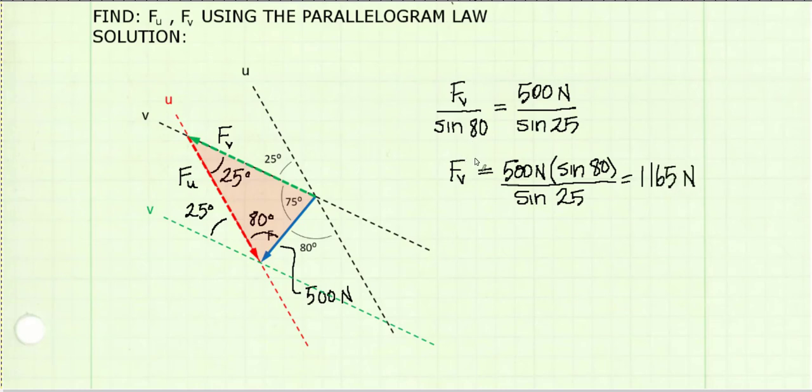Moving sine 80 to the other side of the equation, I can solve for f sub v. I get 1165 newtons. Using three significant figures, I get 1.17 kilonewtons.